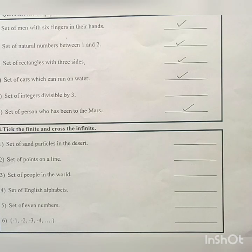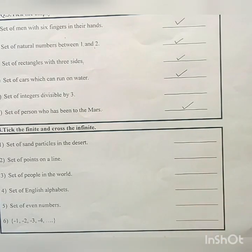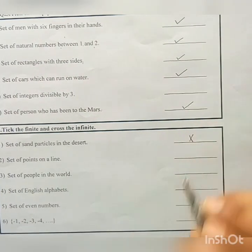Set of sand particles in the desert. The sand particles in a desert are uncountable. We cannot count the sand particles in the desert. So it is an infinite set. It will be crossed out.